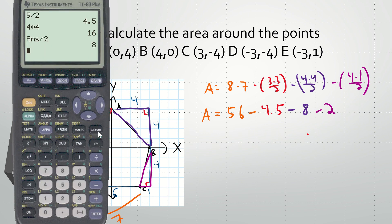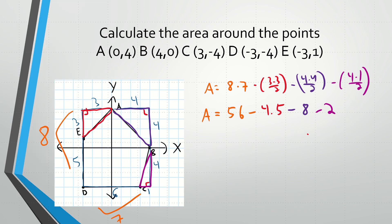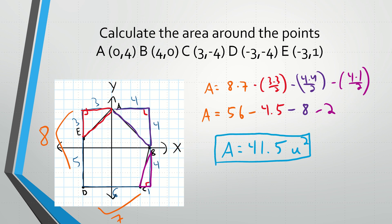So to wrap up: 8 times 7 gives us 56, minus 4.5, minus 8, minus 2, and that gives us an area of 41.5 units squared. You could also split the pentagon into other triangles and rectangles inside, but I find it's easier to just surround it with a big rectangle and subtract the triangles around the shape. So there you have it everyone — that's perimeter and area in the coordinate plane.